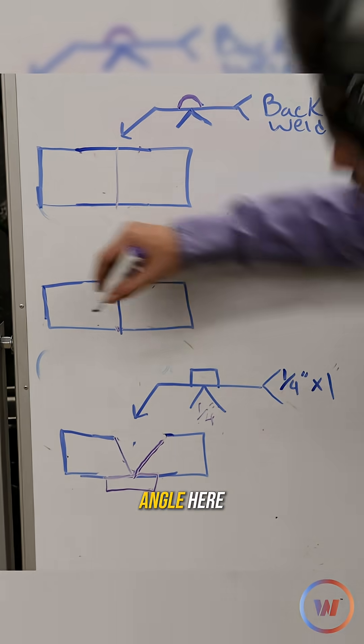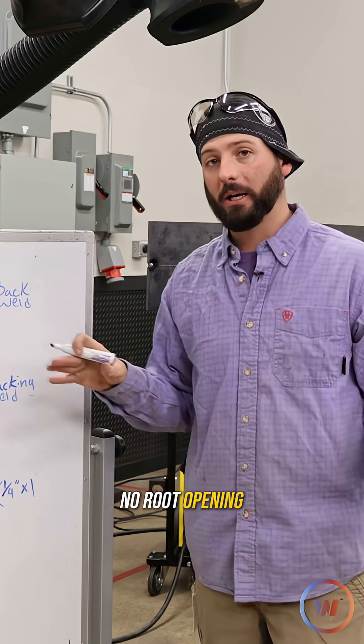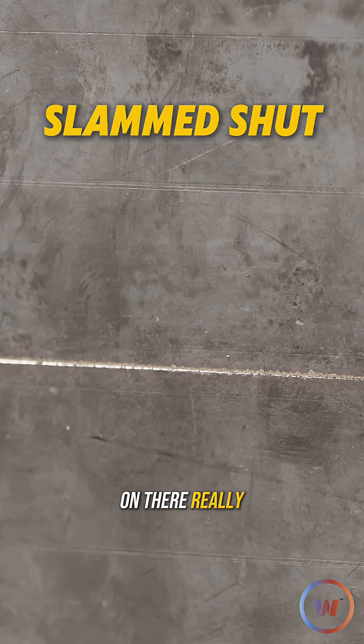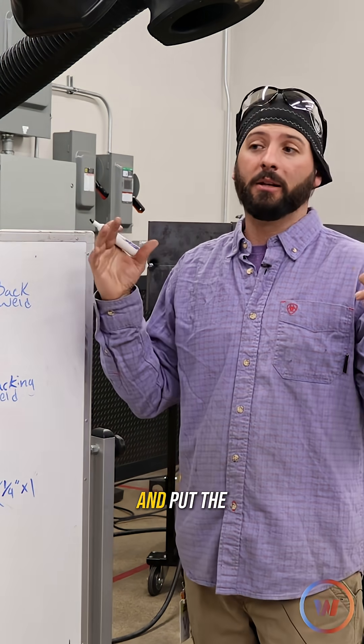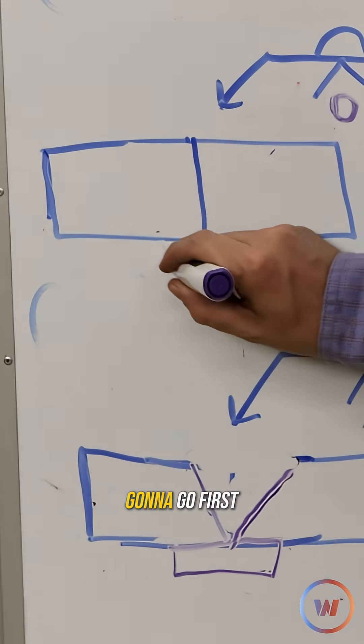So we're going to have our groove angle here. We're going to have no root opening. I want that weld to sit on there really easily so that we can get in the groove and grind or gouge to some sound material and put the rest of the weld in. But the weld is going to go first.